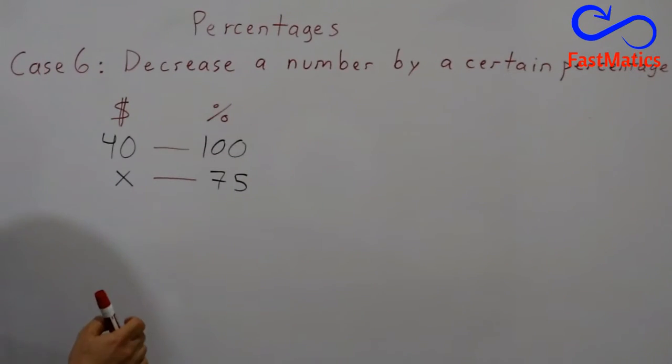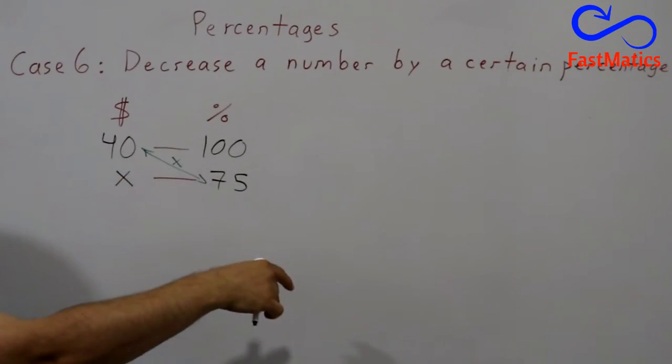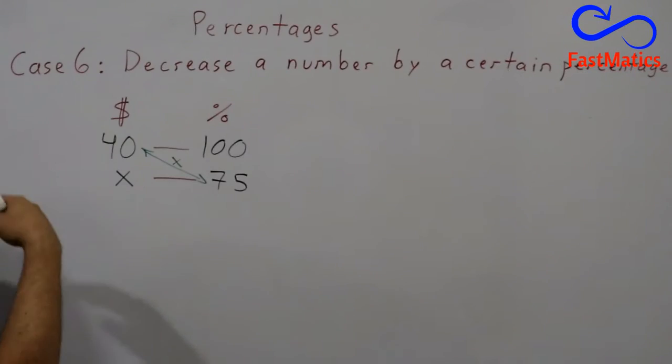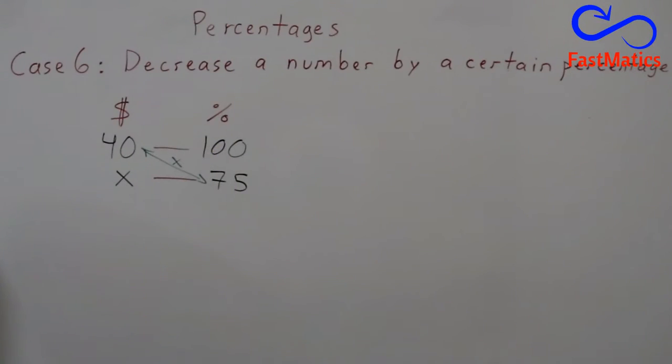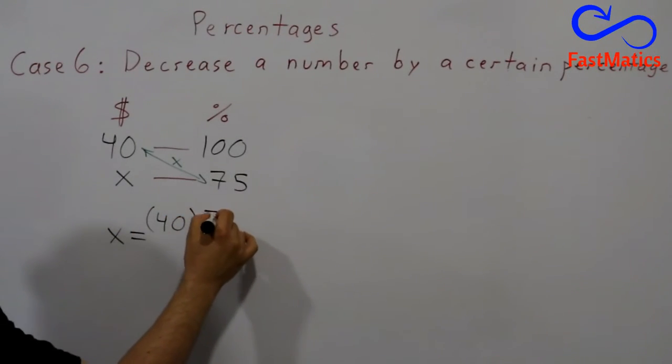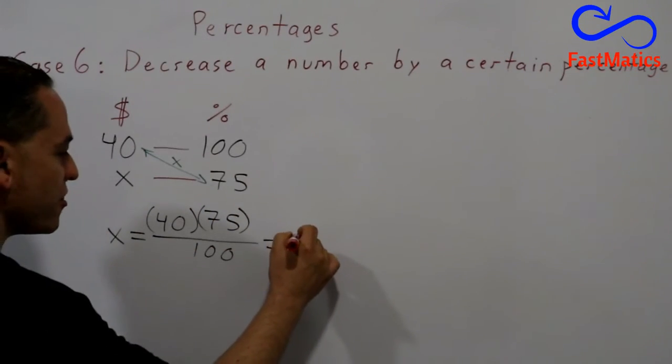And the question is how much are we going to pay for that dress if we have a discount of 25%. It is very important to subtract 25 from the 100 in order to write 75%. A rule of three can be solved multiplying the two numbers that have a couple in diagonal and the answer is divided by the number that doesn't have a couple in diagonal. So we are going to write x is equal to 40 times 75 divided by 100. And the answer is $30.